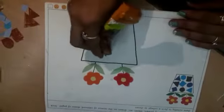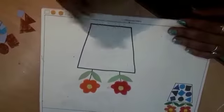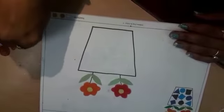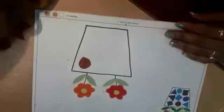Now come to the pot. First spread the fevicol on it like this and paste the cutting of a circle of paper.